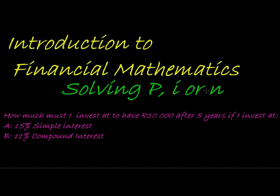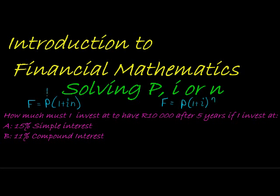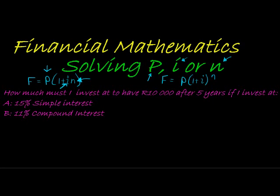So far it's been quite easy as we were trying to solve how much I will have in the future if I invest a certain amount in the past. Now we're going to look at these two formulas — the simple interest formula: future value equals present value times (1 plus i times n), and the compound interest formula: future value equals present value times (1 plus i) to the power of n. Now if I want to know what my present value should be, how much interest I should earn, or how long I should invest — how will I go about solving those?